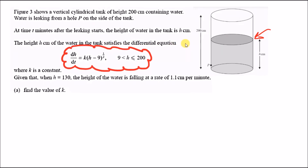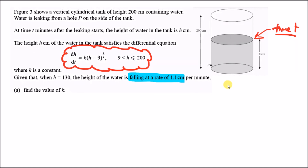This height occurs at some time t. Given that h equals 130, the height of the water is falling at a rate of 1.1 centimeters per minute. The key word here is 'falling' — because there's a decrease at this rate, this means the derivative of h with respect to t is going to be negative 1.1. Therefore, dh/dt equals minus 1.1.